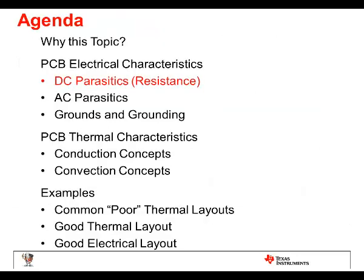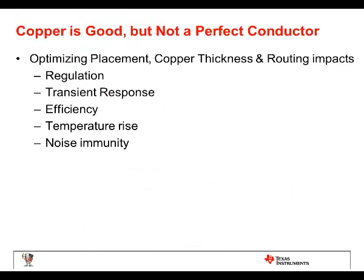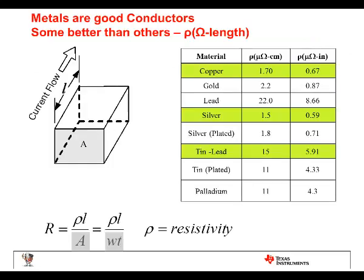First, we'll talk about DC parasitics. Copper is a good conductor, but not a perfect conductor. The placement of the copper, the copper thickness, and routing affects the regulation, transient response, efficiency, temperature rise, and noise immunity. Here in the diagram we see a trace with cross-sectional area A and length L. The resistance equals resistivity times length divided by cross-sectional area.